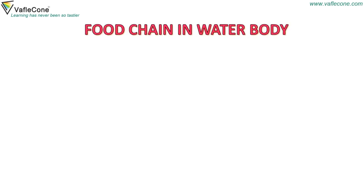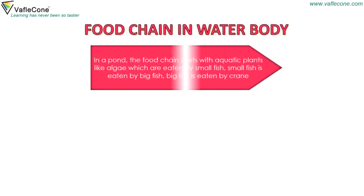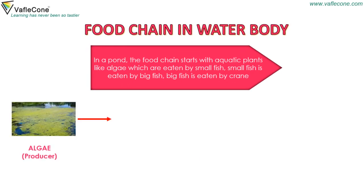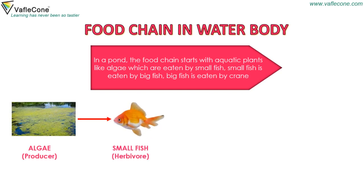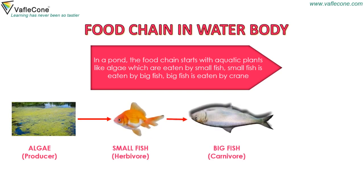Food chain in a water body: in a pond, the food chain starts with aquatic plants like algae, which are eaten by small fish. Small fish is eaten by big fish, and big fish is eaten by crane.